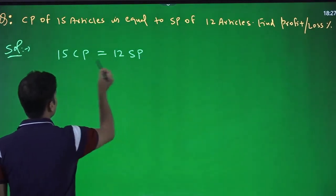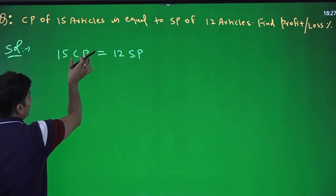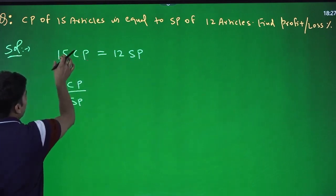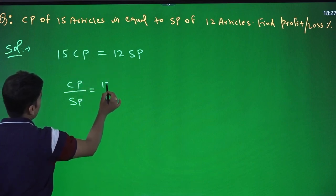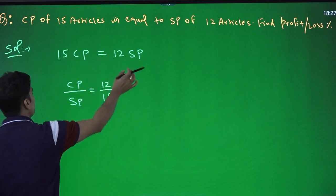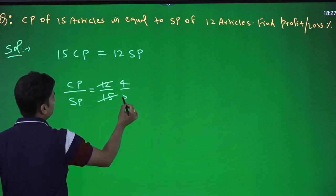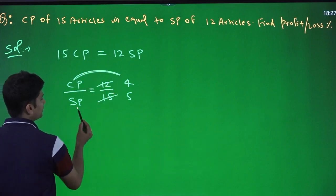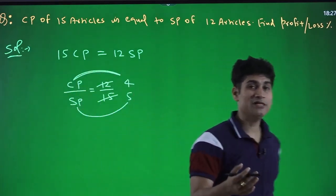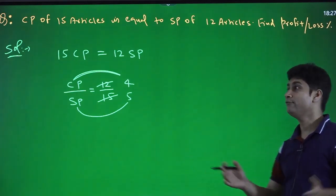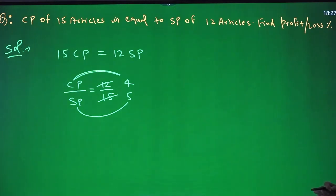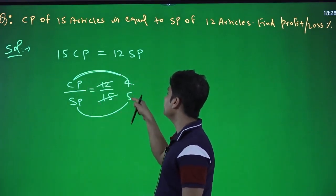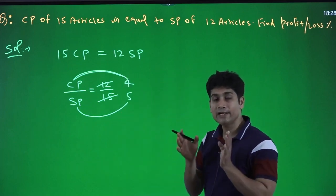Bring SP to the left side so we can write CP upon SP. After cross multiplication, that gives 12 upon 15. Cancelling, 3 fours are 12 and 3 fives are 15, so CP/SP = 4/5. If CP is 4 units and SP is 5 units, CP is less than SP, meaning a profit is being made.